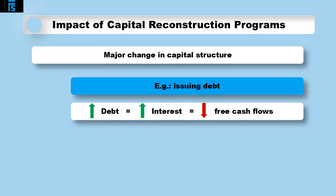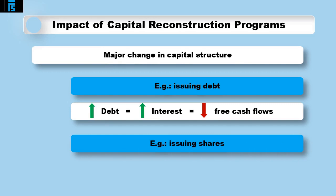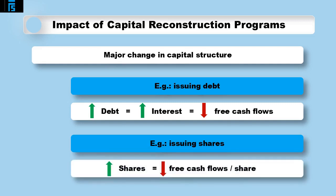As we indicated earlier, investment projects may be financed by issuing new shares. In such cases, the total number of shares to which a dividend will be paid increases, which may lead to a fall in the level of dividend per share in future periods.